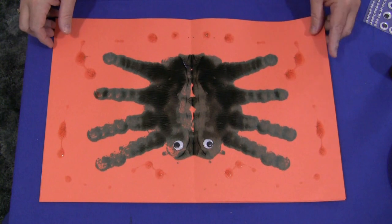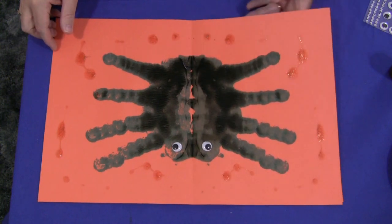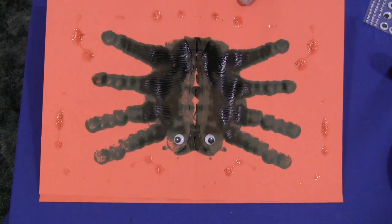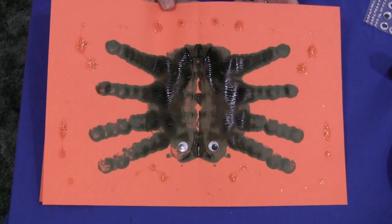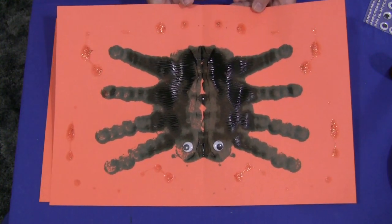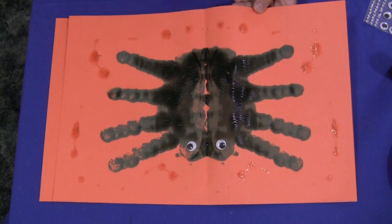Every child spider is going to turn out different. It'll be unique to them. But this is an example of what one will look like. It's called a symmetrical spider because it's the same on both sides.